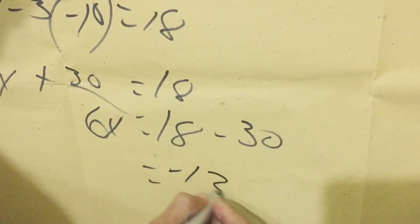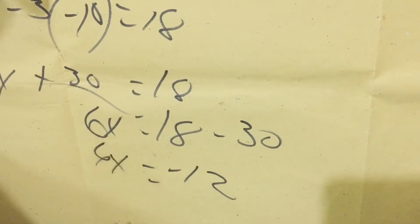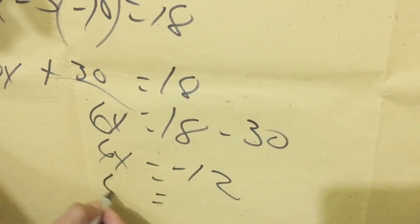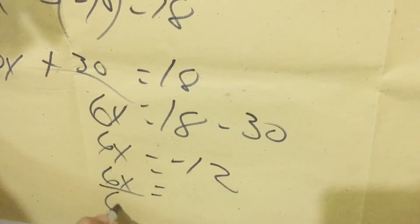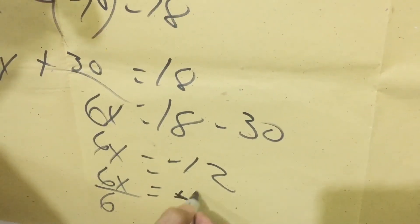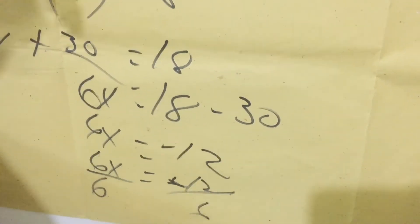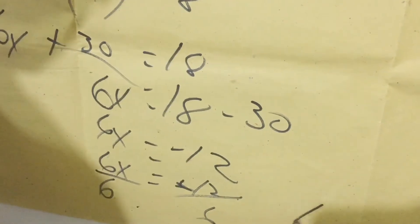We now have 6x equals negative 12. Since we are finding x, we eliminate the 6 by dividing both sides by 6. Therefore, the value of x is negative 2.